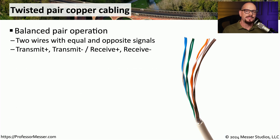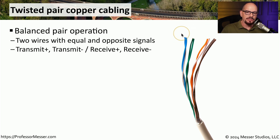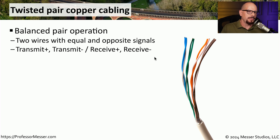One of the most common cable types is the twisted pair copper cable. This is something we use for practically all wired ethernet connections, and it usually consists of multiple wires twisted together within a single sheath. The cables themselves are often paired together, because there's one type of signal on one of the wires and a reverse of that signal on the other wire. You may see this written as transmit plus or transmit minus, or receive plus and receive minus.